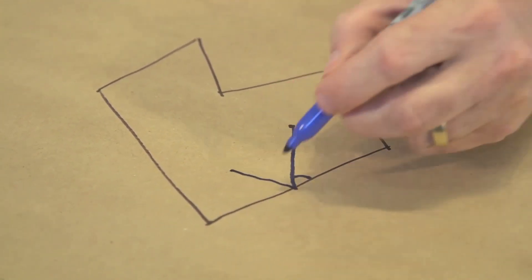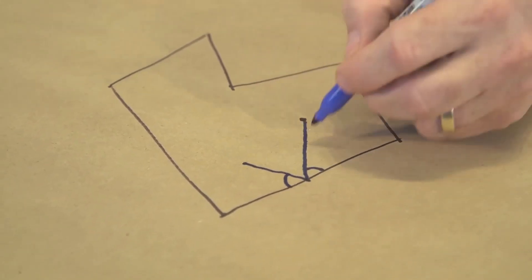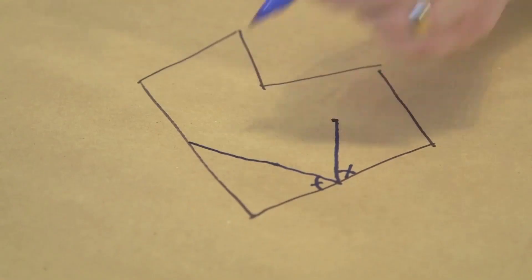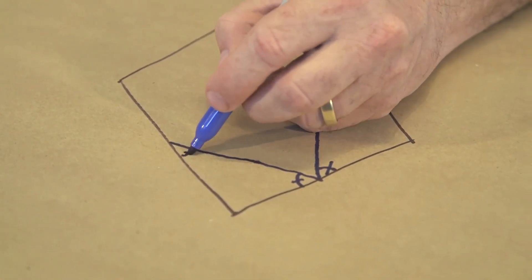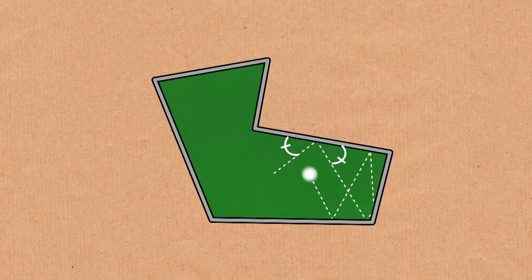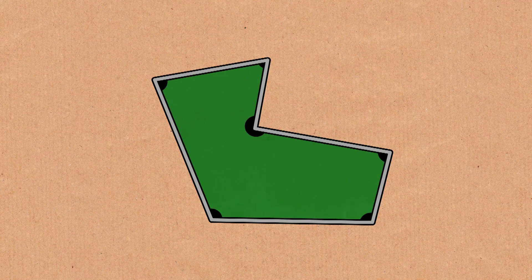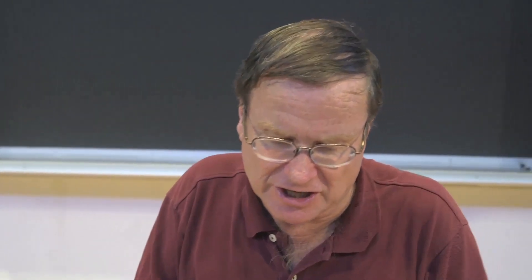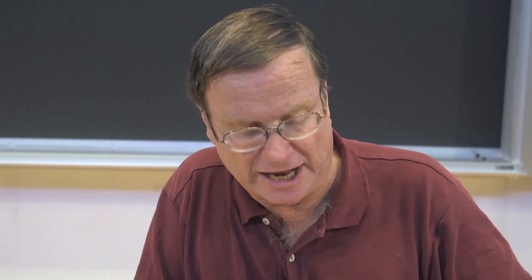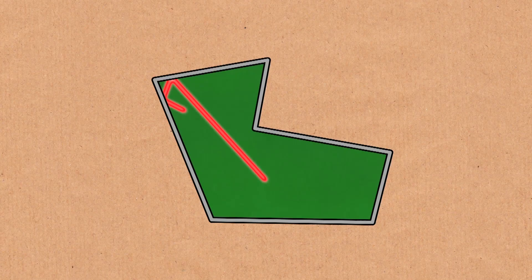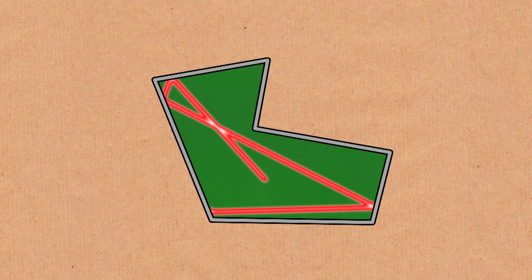We bounce off the side with the angle of reflection equal to the angle of incidence — so these two angles are the same. We continue until we hit another side, bounce off again, and so forth. When you hit a corner, there's no way of defining what reflection means. We can also think of this as a room with mirrors, where a beam of light comes to a mirror, reflects, and continues in a straight line.